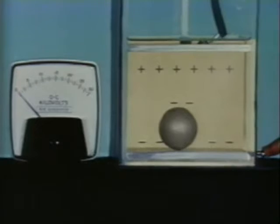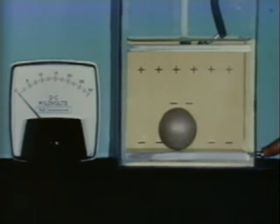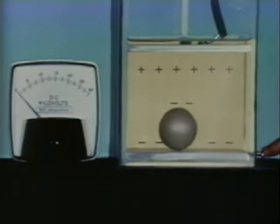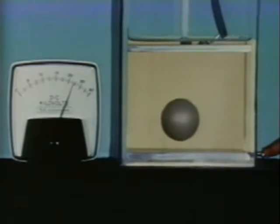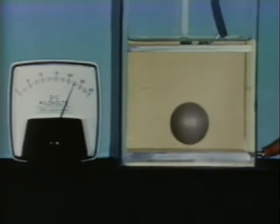The applied voltage induces charges on the electrodes and the contacting metallic sphere. By virtue of the charges on its surface, the sphere is attracted toward the upper plate. But as the sphere rises, the charge induced on its surface leaks off through the liquid. And eventually, gravity returns the sphere to the plate to renew the process.